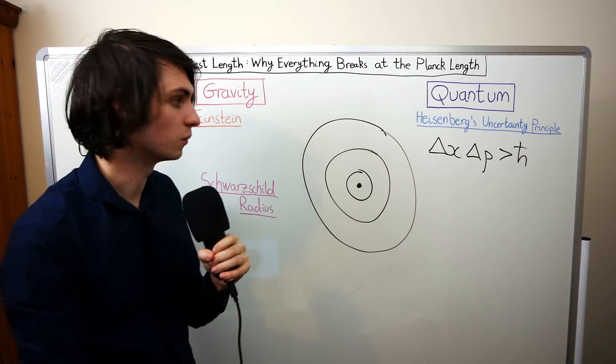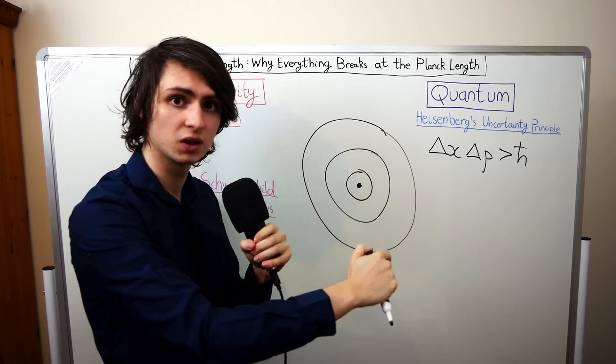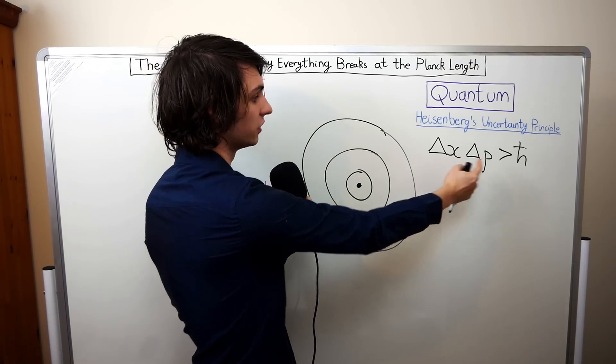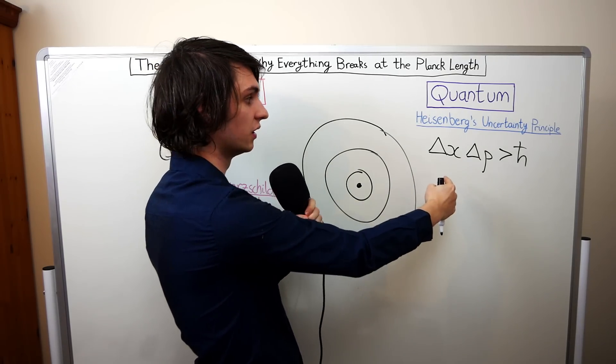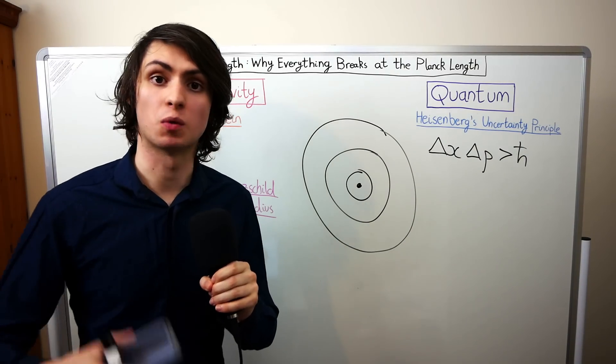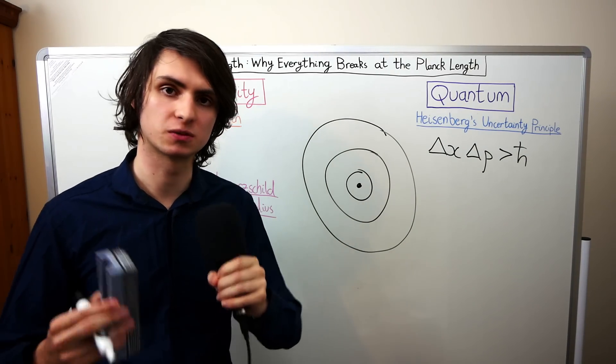We can see that we can't ever know absolutely a particle's position because if we did then the uncertainty in its position would be zero, this left hand side would be zero, and so the inequality clearly wouldn't be satisfied. Let's connect this to what we were saying before about there being a smallest length.